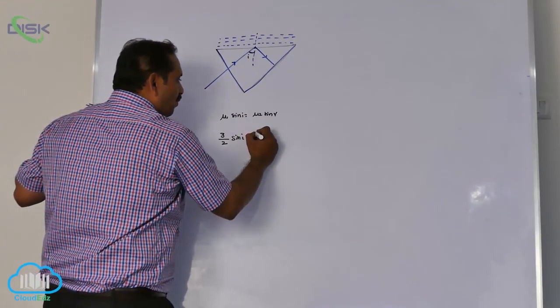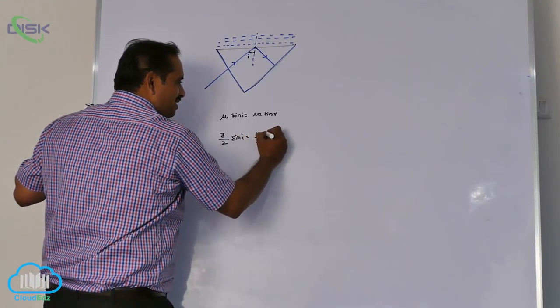Mu 1, where to where I am moving? Glass to water. Glass to water means glass refractive index 3 by 2, sin I. I want to calculate. Mu 2, water, 4 by 3, sin R.